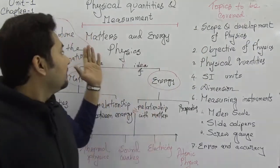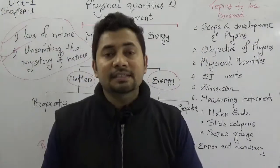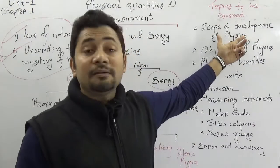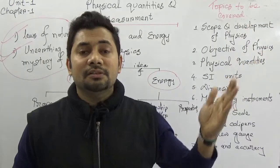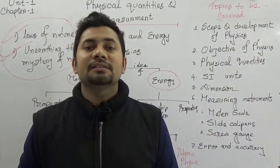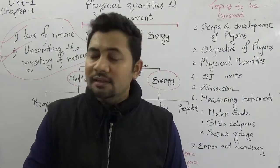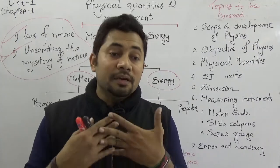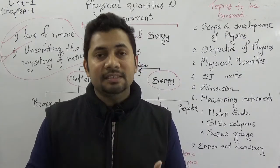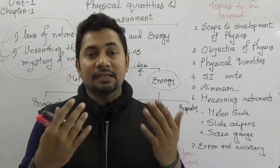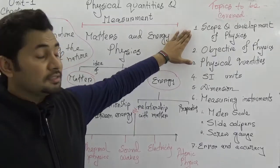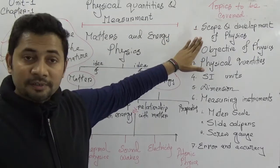In the very next class I will explain about what is the development of physics, how from Thales, Plato, Socrates, Euclid, Pythagoras, Newton, and loads of scientists who invented from their best end, and we got today the amount of science in outside. This is number one: scope and development of physics. Number two: objective of physics I discussed.